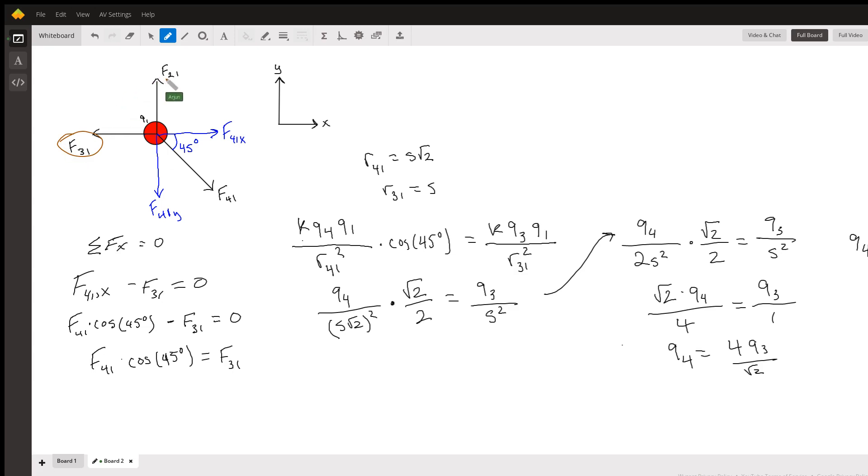The force that charge two exerts on charge one will be in the positive y direction, as I've drawn. The force that charge four exerts on one will be along the diagonal of the square, so we'll split this force four-on-one into its x and y components, which I've done in blue.